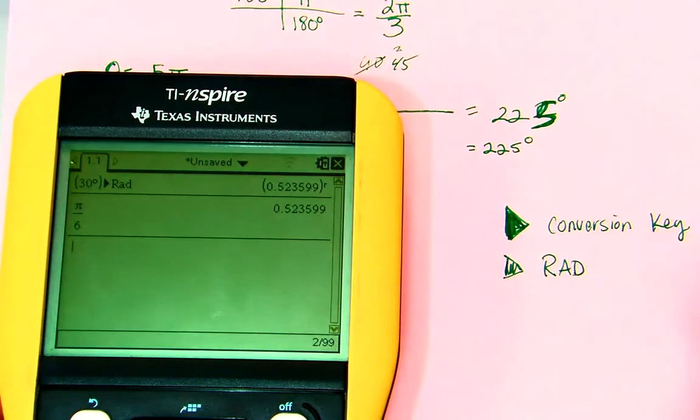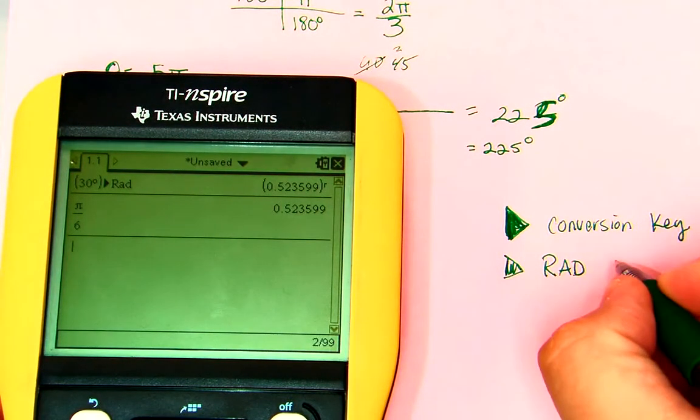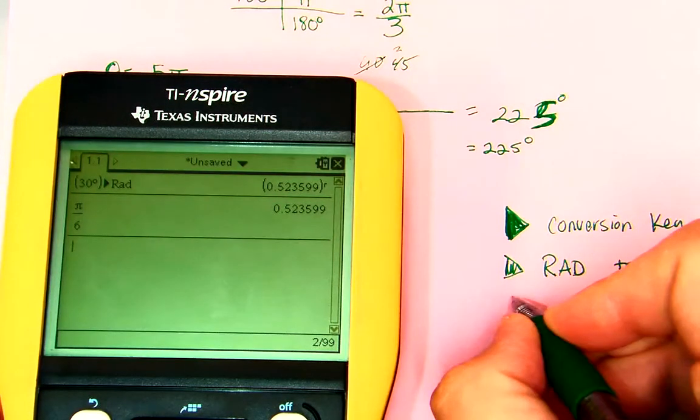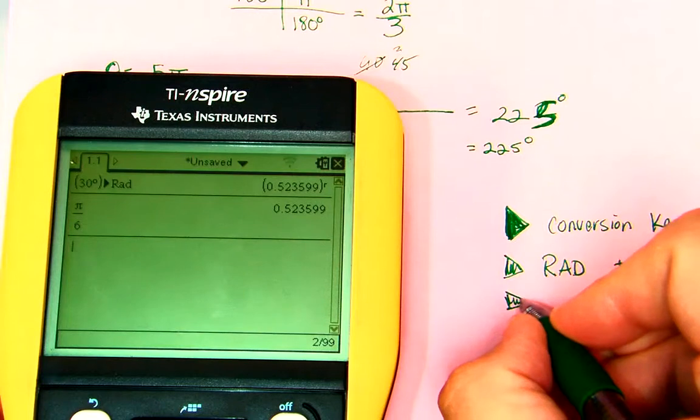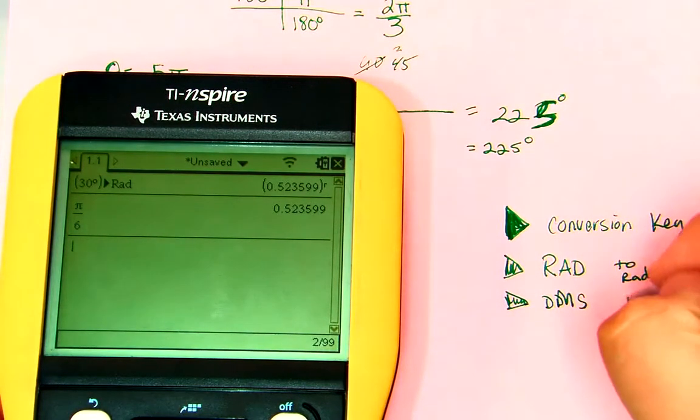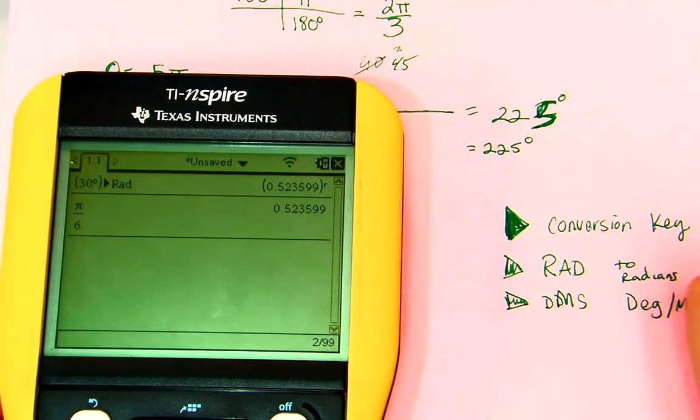If you type in rad, you convert to radians. And, remember from earlier in the year, if we do DMS, this is degrees, minutes, seconds. Which is fine.